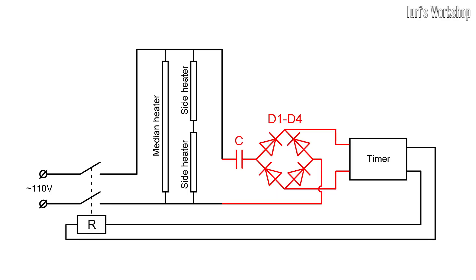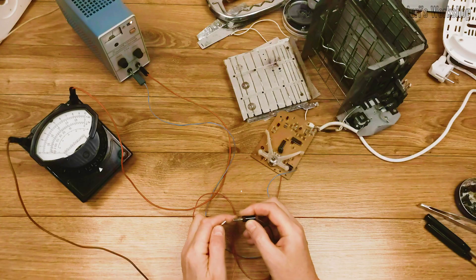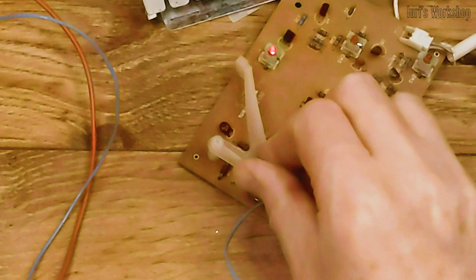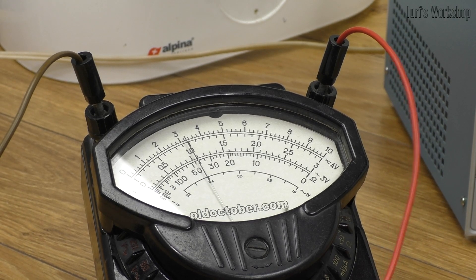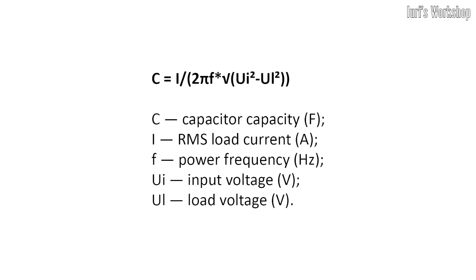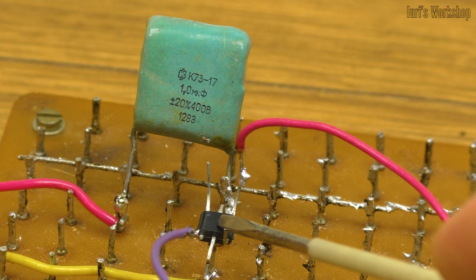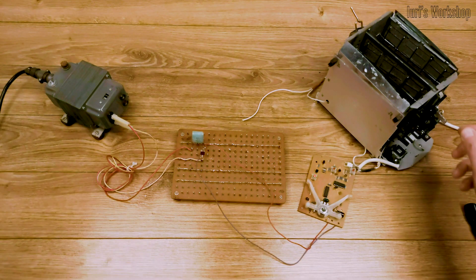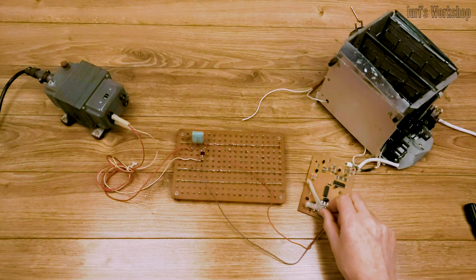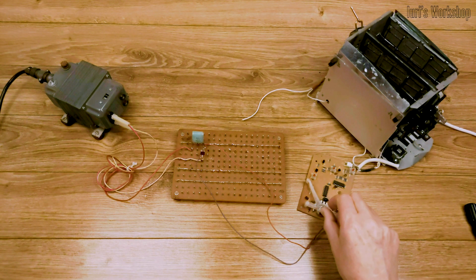And secondly, I decided to completely redesign the power system so that I could power the timer directly from the mains. To do this, I first measured the current consumption of the timer, and then I calculated the quench capacitor using this formula. I connected the capacitor through a diode bridge to a voltage regulator on a zener diode, which was already on the circuit board, and then I made sure the timer was working properly.